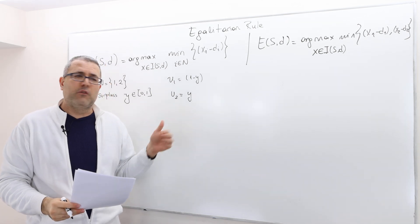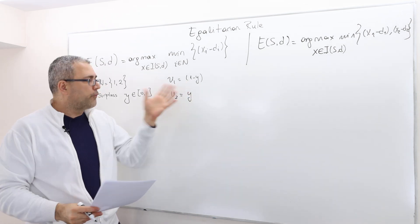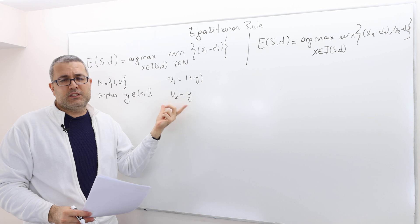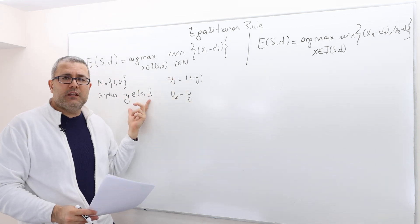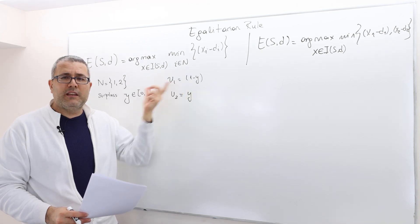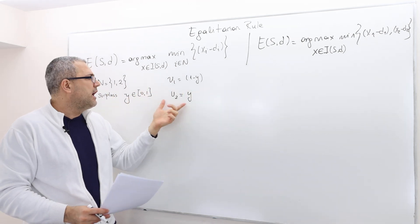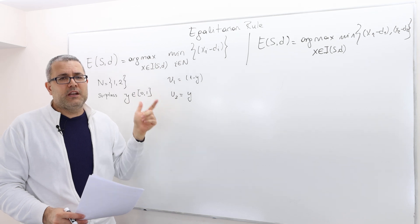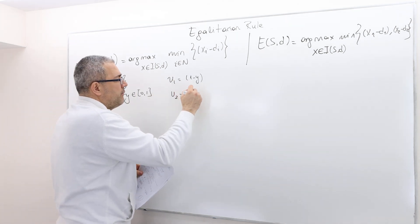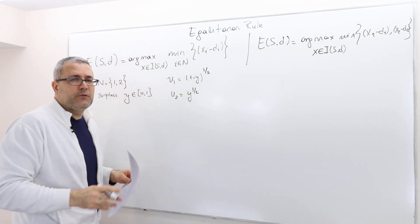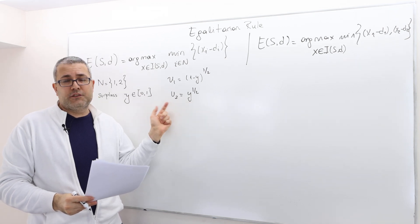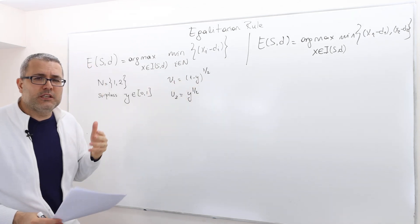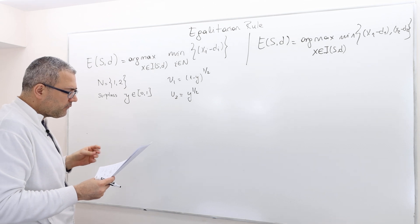Normally in the Rubinstein alternating-offer bargaining game we assume u1 = 1 minus y and u2 = y, meaning both players are risk neutral. However, I want to make them risk averse, so player two's utility is square root of y and player one's utility is square root of (1 minus y).